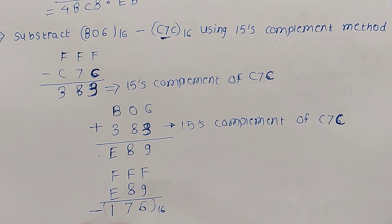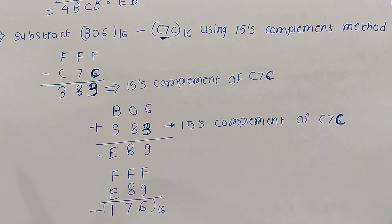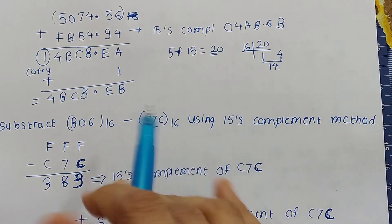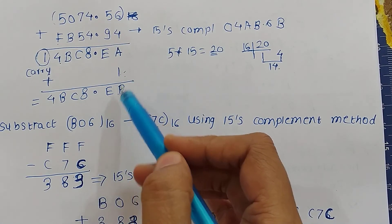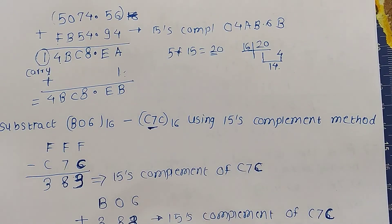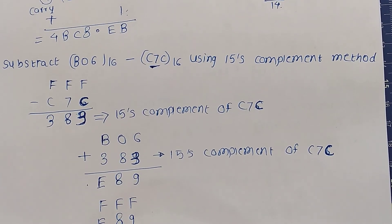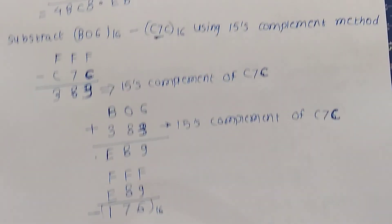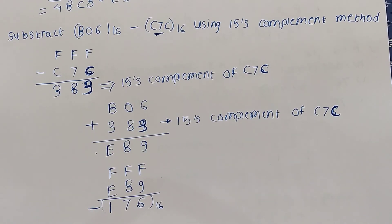In summary: if there is no carry, the answer is negative and is obtained by subtracting the result from FFF. If a carry is generated, as seen in the first example, we add the carry to the result and get the answer directly. This is all about subtraction using the 15's complement method for hexadecimal numbers.